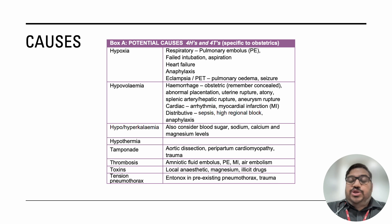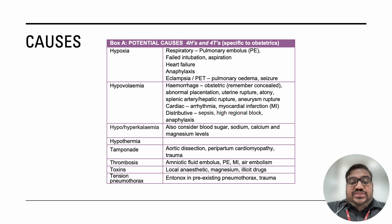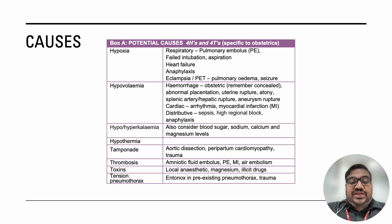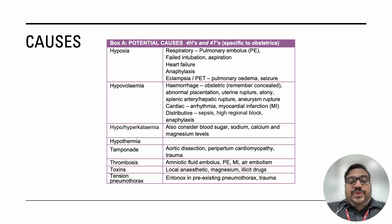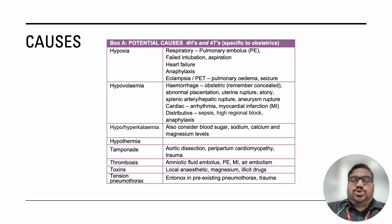Further causes include electrolyte abnormalities — hypo- or hyperkalemia — and always check blood sugar, sodium, calcium, and magnesium levels. Hypothermia, cardiac tamponade, aortic dissection, and peripartum cardiomyopathy should be considered. Under thrombosis, specifically consider amniotic fluid embolism, pulmonary embolism, MI, or air embolism. Toxin causes include local anesthetic toxicity, magnesium toxicity when treating preeclampsia — the antidote being calcium gluconate — and illicit drug use. Tension pneumothorax can occur with Entonox use in patients with pre-existing pneumothorax.